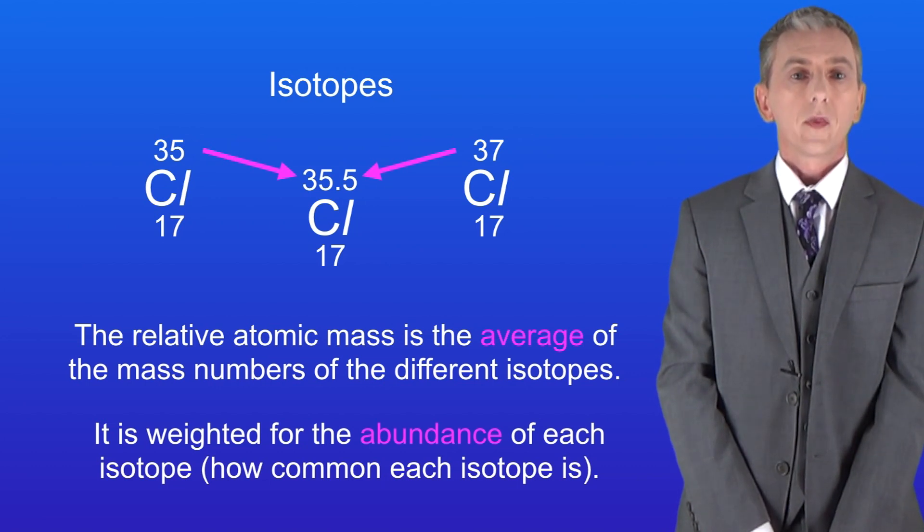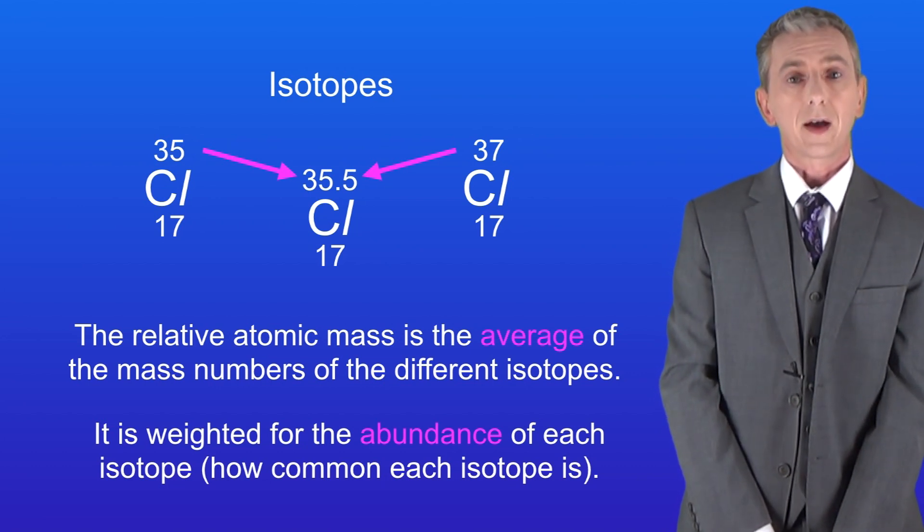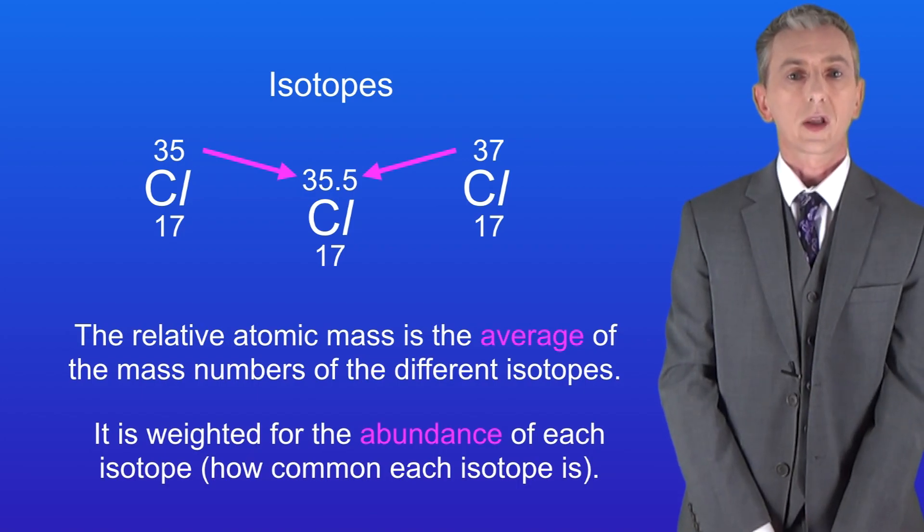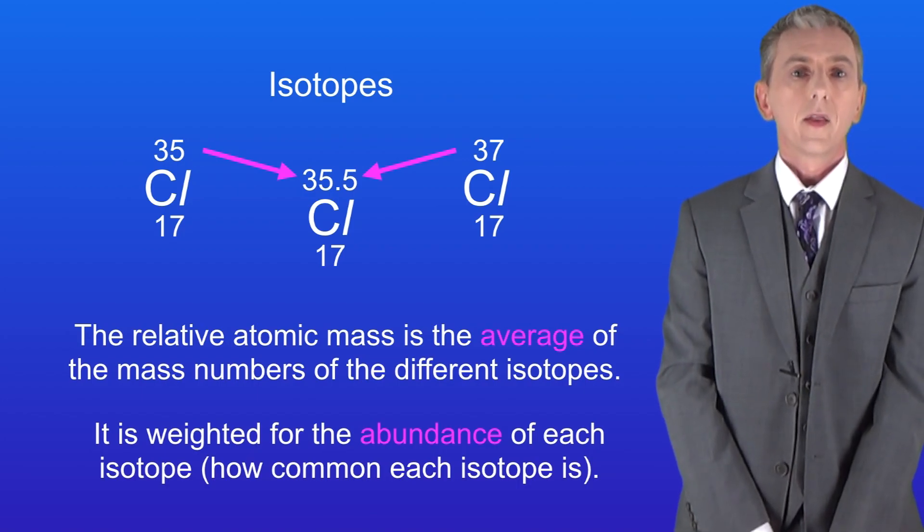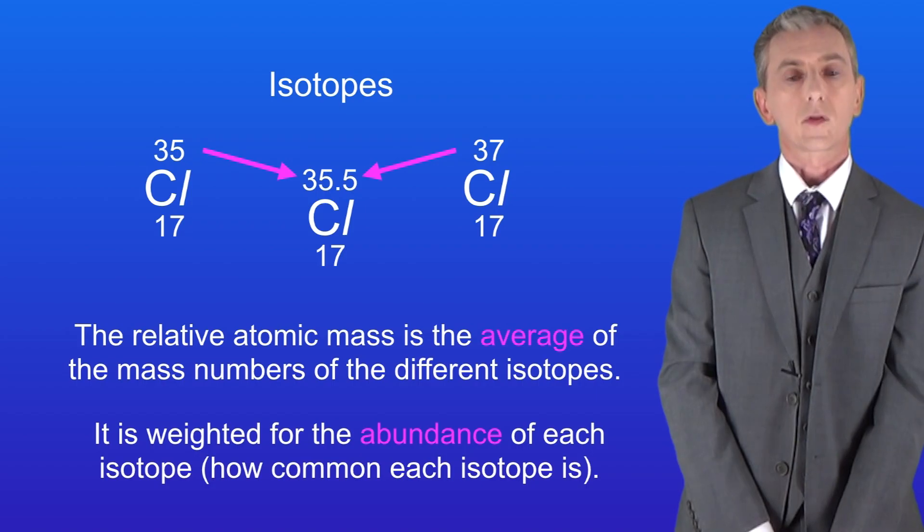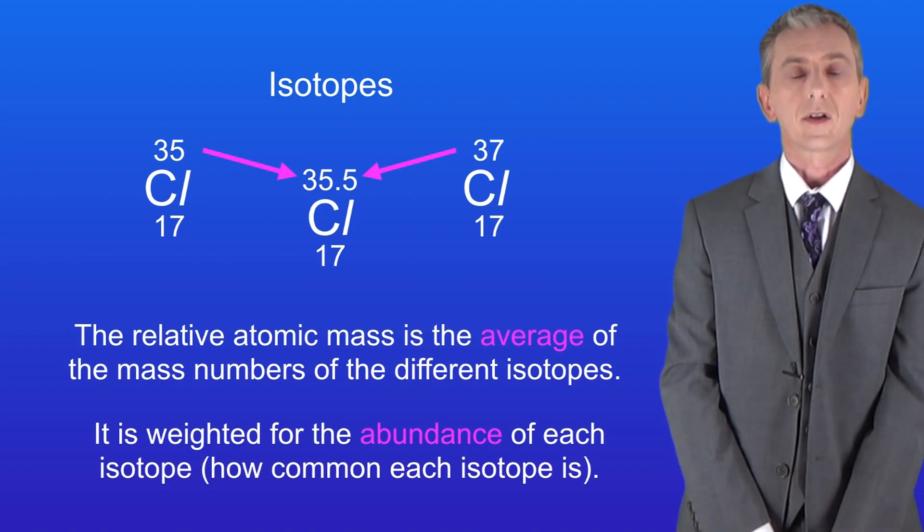Looking at chlorine, the isotope with a mass number of 35 is three times more common than the isotope with a mass number of 37. This explains why the relative atomic mass of chlorine is much closer to 35 than to 37.